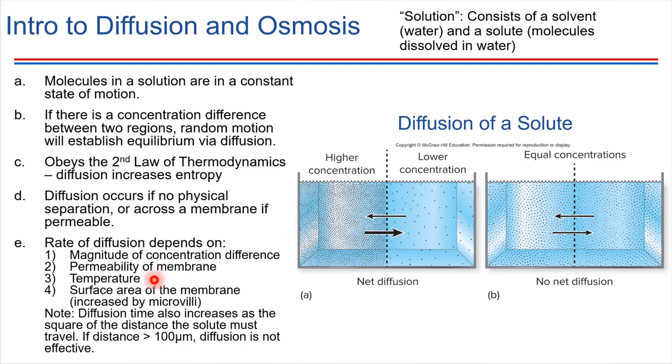Temperature. Temperature is something that influences how quickly molecules are moving. And the more quickly they move, the more frequently they'll bump into each other and tend to spread apart from each other. Generally higher temperatures means faster rates of diffusion.